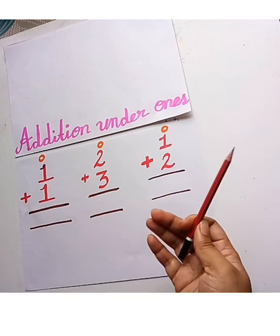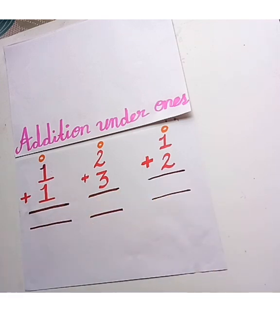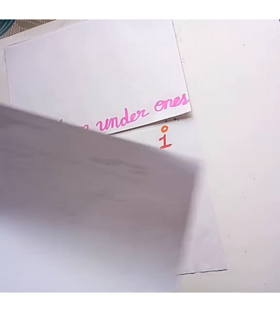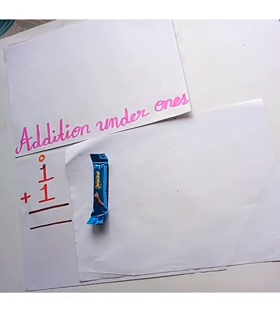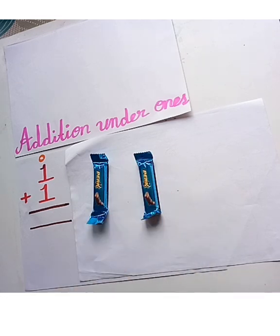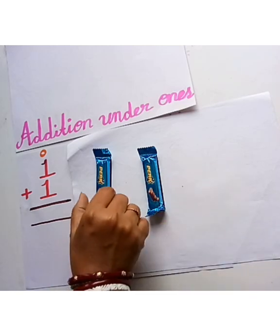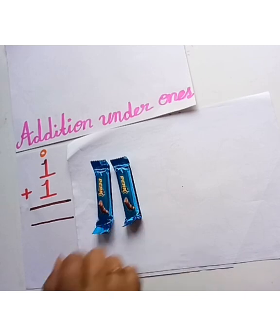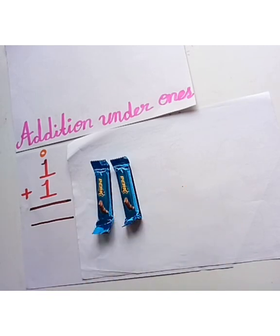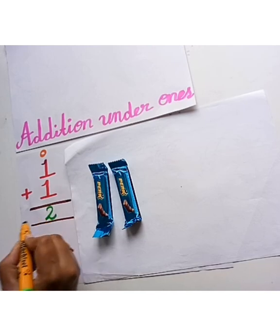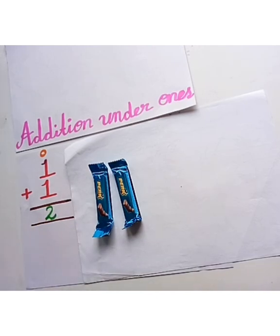Let's first add 1 plus 1. This is one chocolate and this is another. How many chocolates are there? 1, 2. Here are 2 chocolates. So we will write here 2.